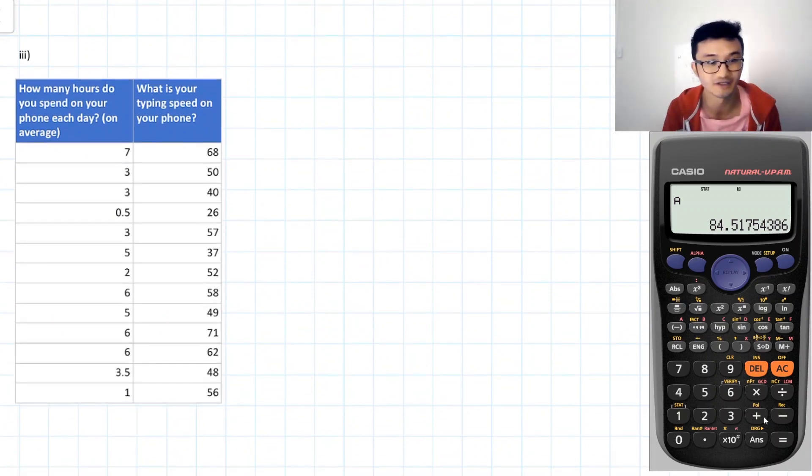All right. Last but not least, how many hours do you spend on your phone each day on average? And what is your typing speed on your phone? So you'd expect it to be some kind of relationship between them. And we can find out that there is a correlation. So the part three, we want to see if there's relationship between the hours you spend on your phone and your typing speed. So I guess you'd make sense if you're typing on your phone a lot, then you get faster at typing. Let's go and find out if that's actually the case.